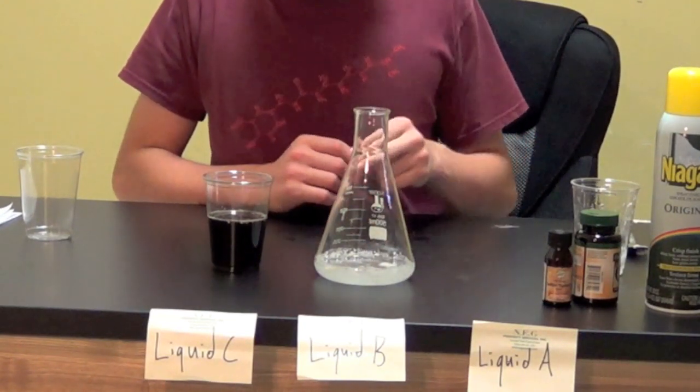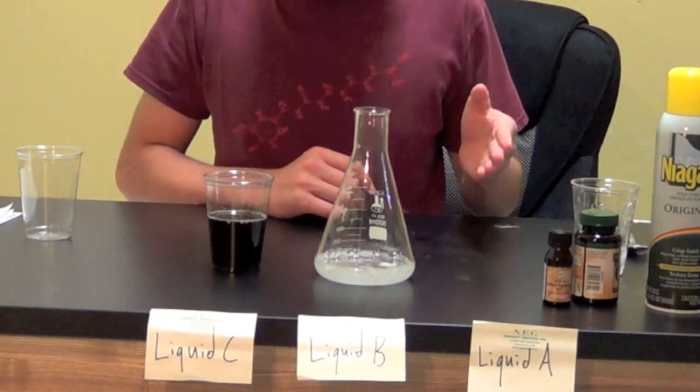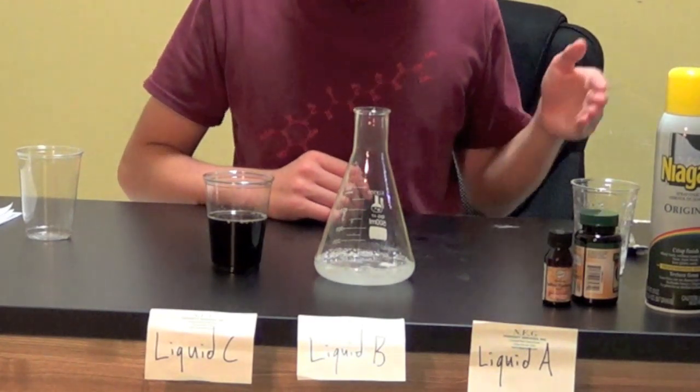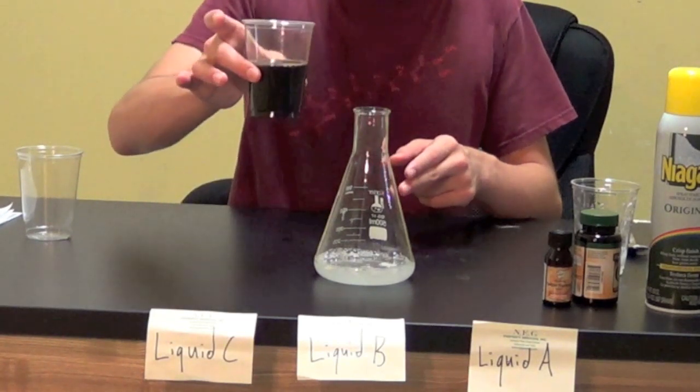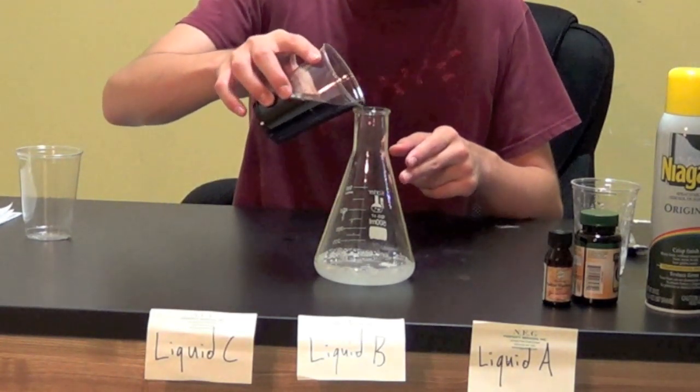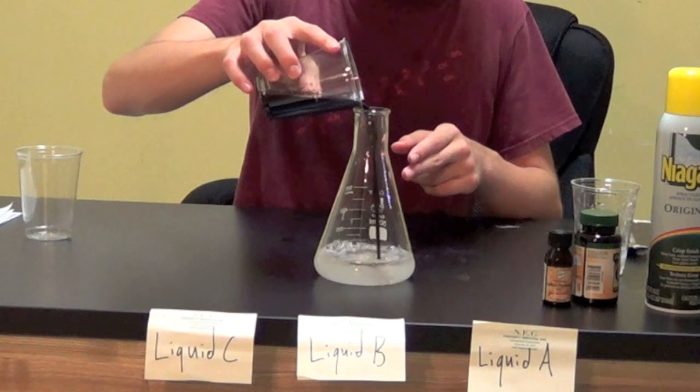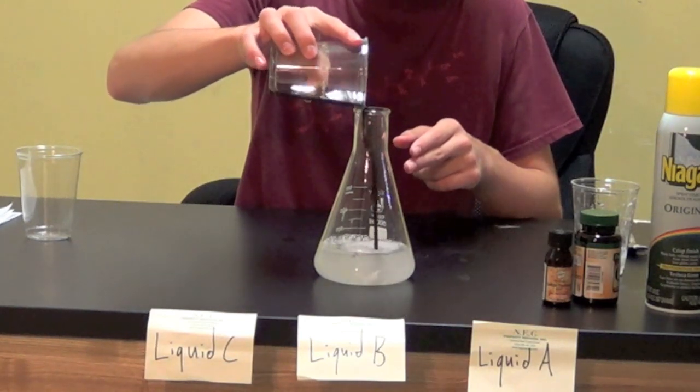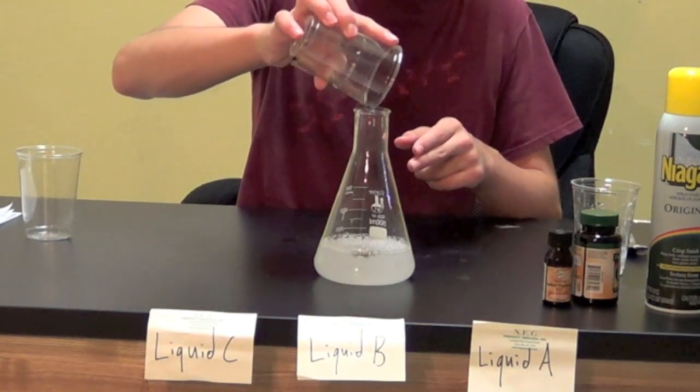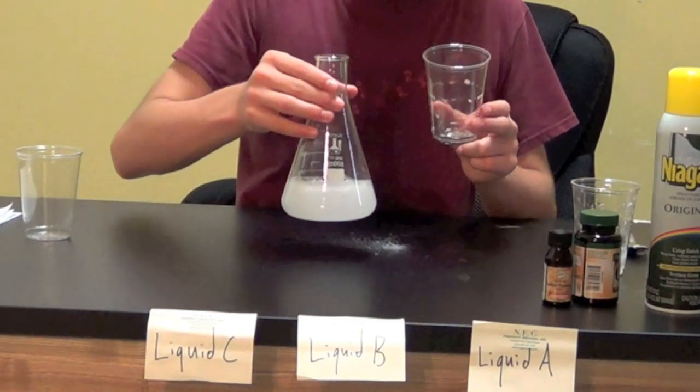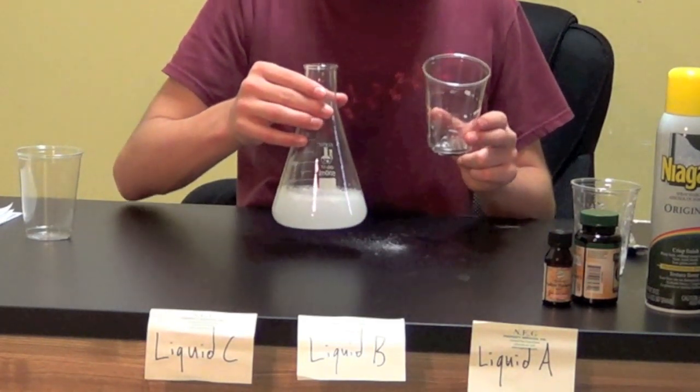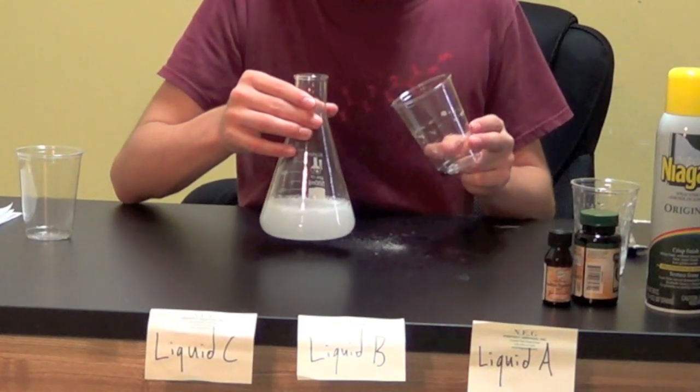In a flask, take solution A that we made earlier in the video, solution A is the water and the vitamin C tablets, and add your iodine mixture. As you will notice, this mixture immediately goes clear, indicating that the iodine has been reduced back to iodine ions, which are safe for you to dispose down the drain.